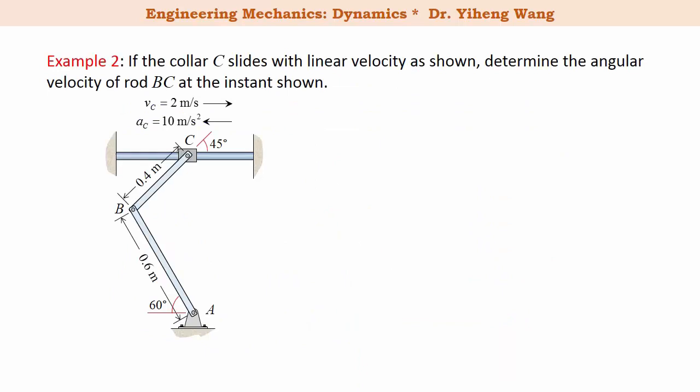Let's revisit this problem that we looked at in the previous video, and let's try to solve the angular velocity of rod BC using the instantaneous center of zero velocity. We can use this approach because we can easily determine the directions of linear velocities of point B and point C, both belonging to rigid body rod BC. Since collar C is only able to move horizontally and its velocity is given, and since point B also belongs to rod AB which is doing rotation about a fixed axis at point A, its velocity is perpendicular to the relative position vector.